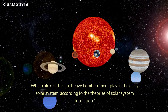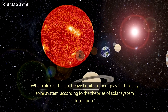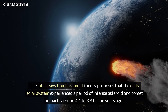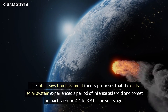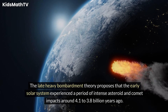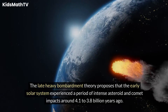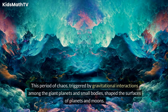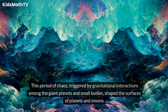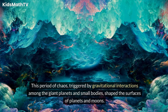The Late Heavy Bombardment Theory proposes that the early solar system experienced a period of intense asteroid and comet impacts around 4.1 to 3.8 billion years ago. This period of chaos, triggered by gravitational interactions among the giant planets and small bodies, shaped the surfaces of planets and moons.